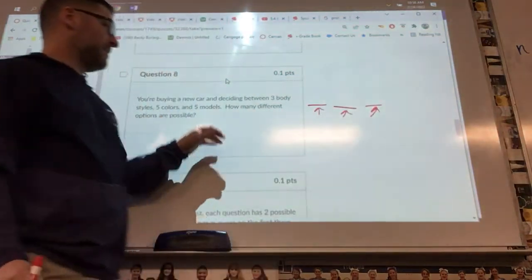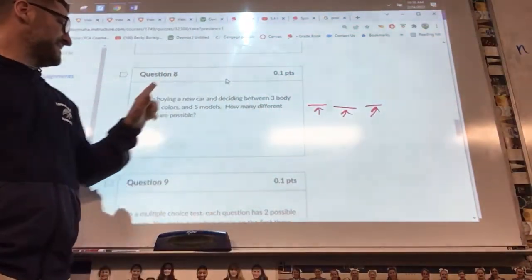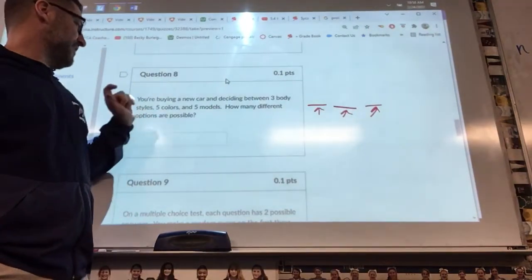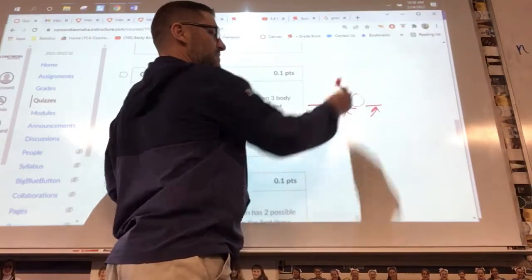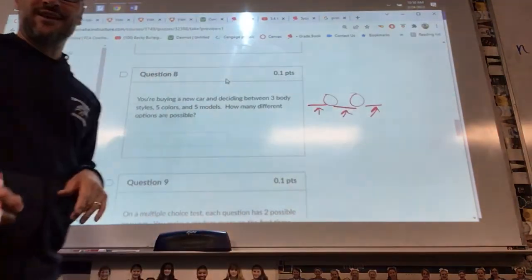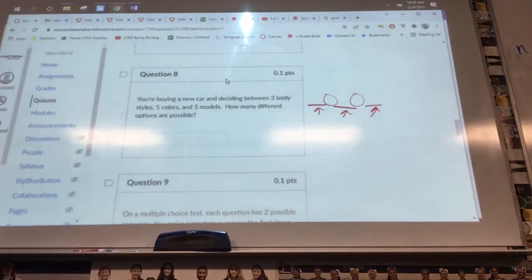And by the way, you have three body styles and you have five colors and you have five models. So that 'and' sign would tell you what to do in between those. You should be able to crank that on your calculator and get it without too much of a problem.